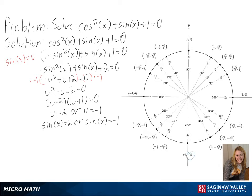Since sine of x will never equal 2, we will get no solution, but sine of x does equal negative 1 at 3 pi over 2.